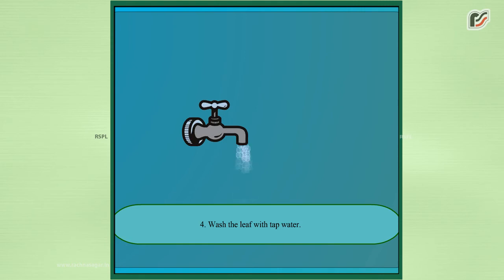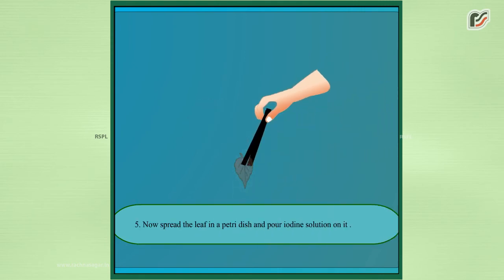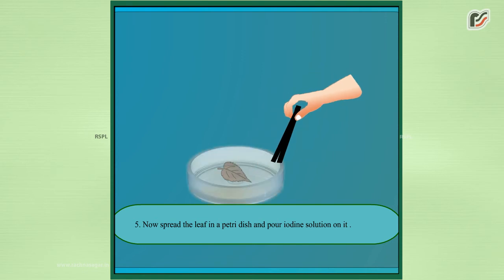Wash the leaf with tap water. Now, spread the leaf in a petri dish and pour iodine solution on it.